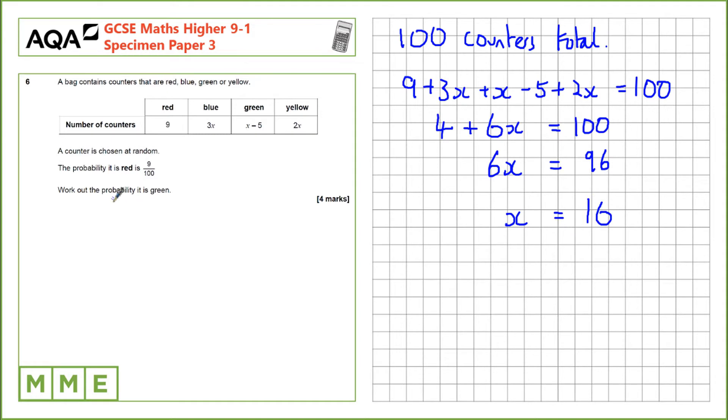So if x is 16 we can work out the number of green counters. If x is 16, the number of green is 16 take away 5. The number of green counters is 11 green counters.